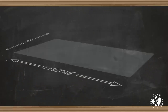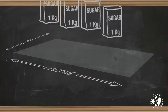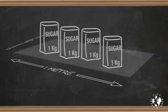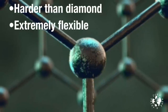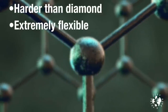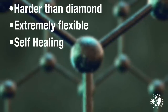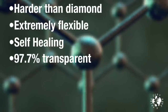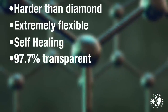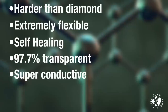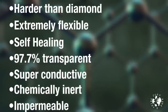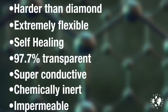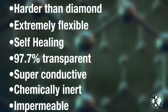A square meter of graphene weighing just 0.0077 grams can support four kilograms. The magic doesn't stop there — graphene is also harder than diamond but extremely flexible, and can be stretched by 20%. It's self-healing, in its purest form it's 97.7% transparent, it's more electrically conductive than copper, it's chemically inert and practically impermeable, and it can be folded and crumpled any way you like, which vastly increases its surface area in a confined space.